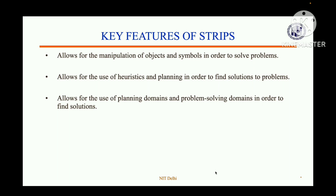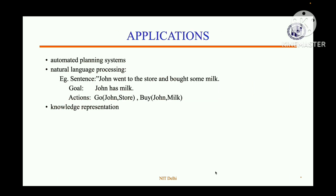Applications of STRIPS include automated planning systems for planning routes. Another application is natural language processing, though STRIPS can't handle ambiguity and variability. An example would be appointment scheduling, as we discussed.